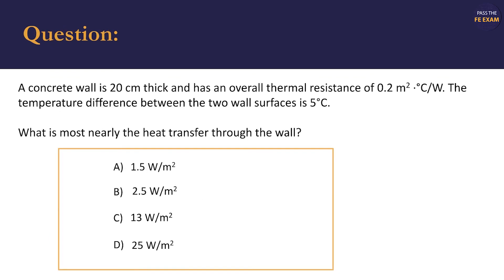The second thing is the problem solutions are all in watts per square meters, meaning the wall surface area isn't necessary information to solve this problem. The third thing we have to take note of is that the problem gives us the overall thermal resistance of the wall in square meters degrees C per watt. We'll have to find a way to correlate this to the thermal conductivity in watts per meter degrees Celsius and the wall thickness in meters.